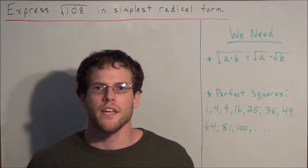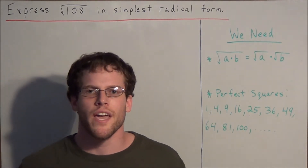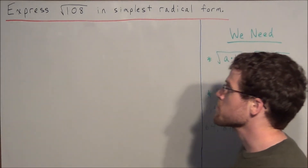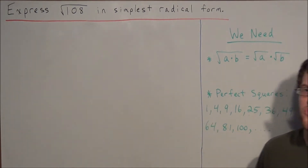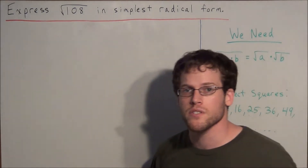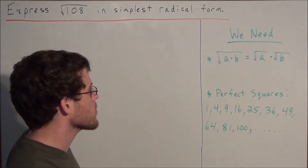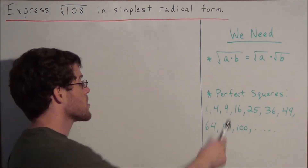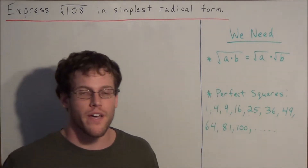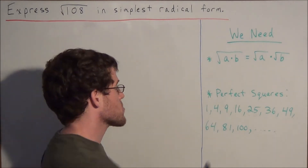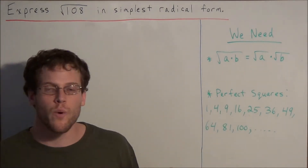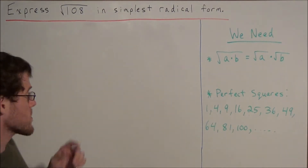Hi, my name is Vincent and today I want to take a look at simplifying radical expressions. We have the problem: express the square root of 108 in simplest radical form. To solve this, we need the following property: the square root of a times b is equal to the square root of a times the square root of b. We're going to combine this concept with perfect squares to answer this problem.